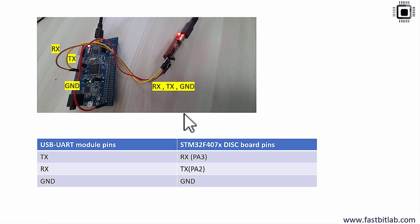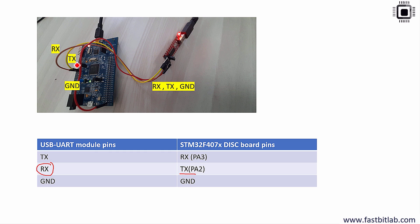To connect the module to the STM32 discovery board, use three pins: RX, TX, and ground. The TX pin of the USB to UART module connects to the RX pin of the discovery board at PA3. The RX pin of the USB to UART module connects to the TX pin of the discovery board at PA2, which is GPIO port A pin 2. The ground pin of the adapter connects to the ground pin of the STM32 discovery board. Only three connections are needed.